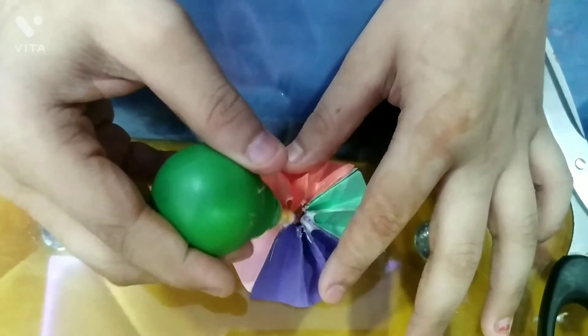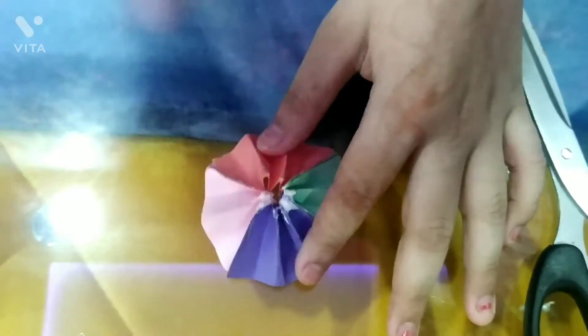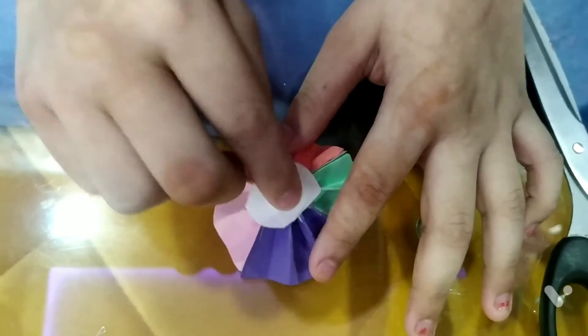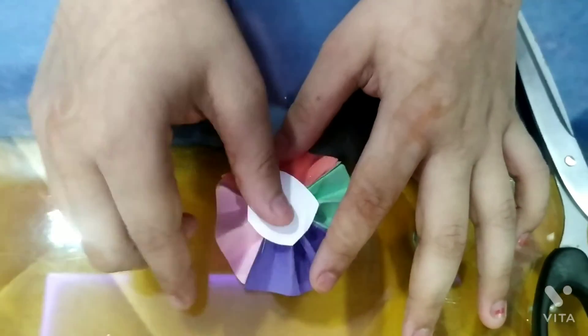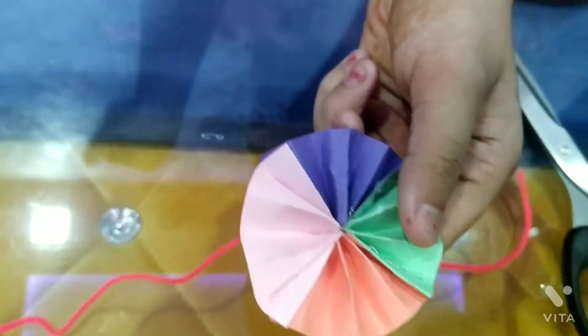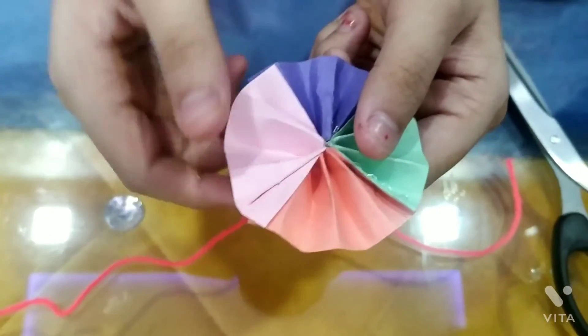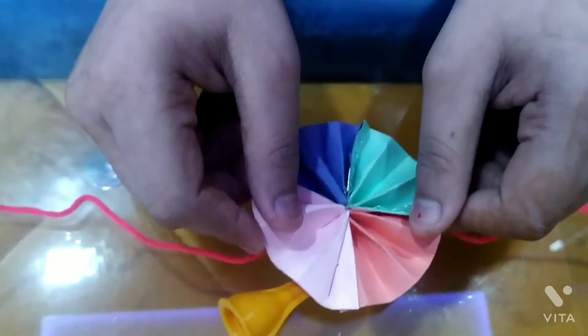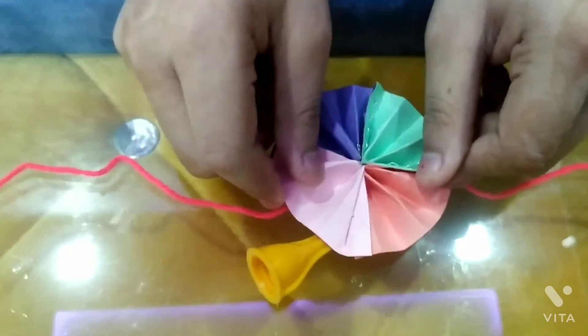Now we have a little Fevicol and paste white sheet. Now our circle is ready. Now we have to paste thread.